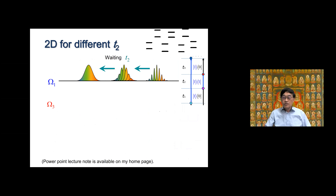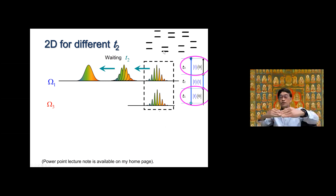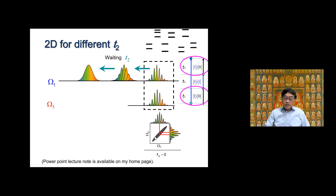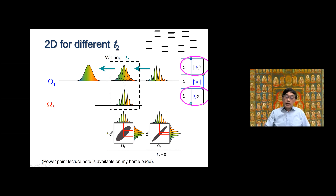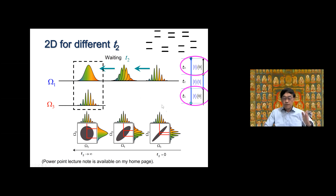For the 2D spectrum, you have two or three excitations and one detection. If the waiting time T₂ is zero, the excitation and detection are highly correlated, representing the resonant peak of each two-level system. Even with slow modulation — some molecules at high frequency, some at low — the 2D spectrum is elongated along the ω₁ to ω₃ diagonal. When T₂ becomes larger, the molecules oscillate and the correlation decreases. If T₂ is very long, there is no correlation and the shape becomes circular.